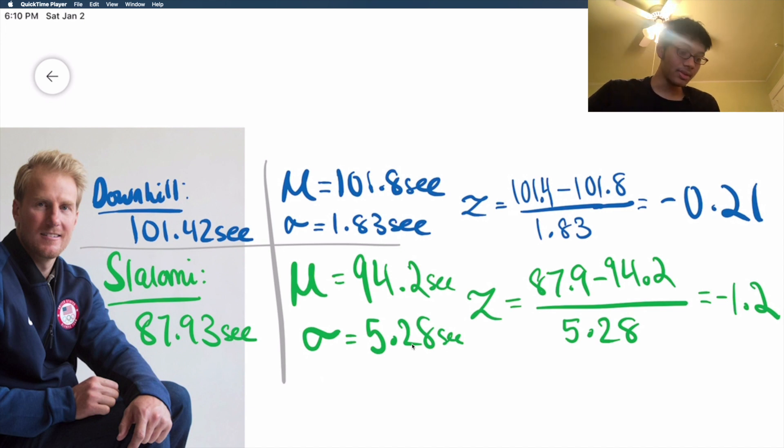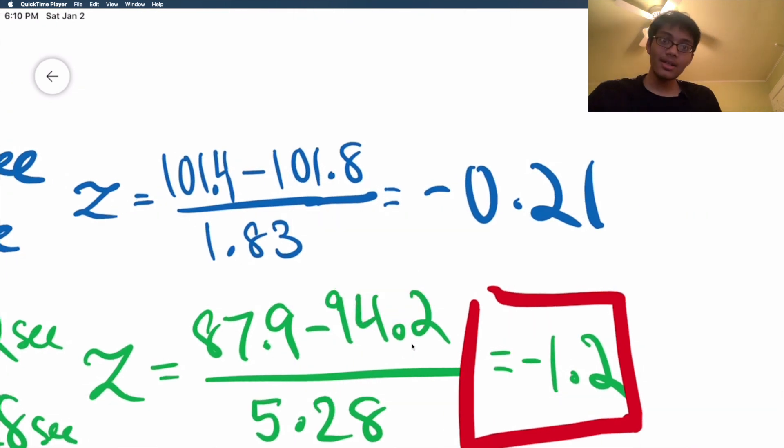So this Ted guy is good. But which sport is he better in, Slalomi or downhill? Well, look at your z-scores. Which z-score is bigger? Which z-score is more unusual? Which data value is more unusual? Well, the bigger your z-score, the more unusual it is, the more special it is. Well look, minus 1.2 is bigger, right?